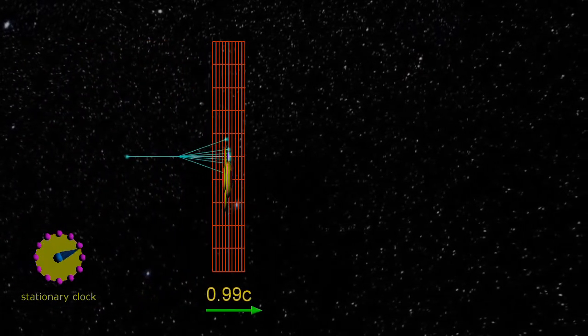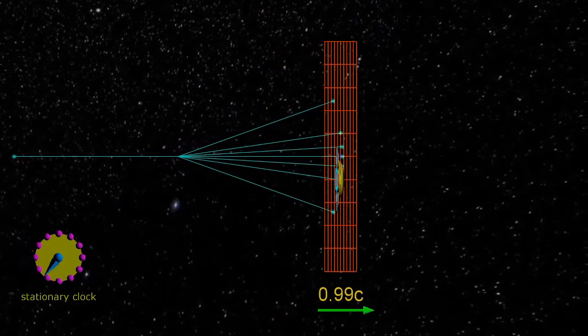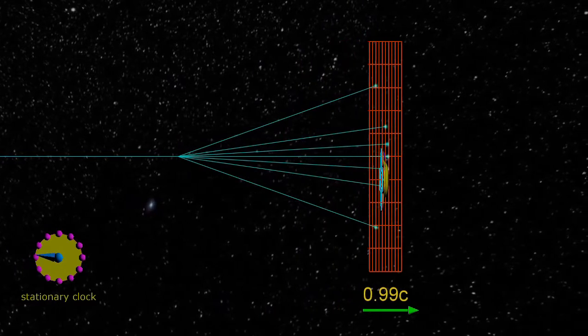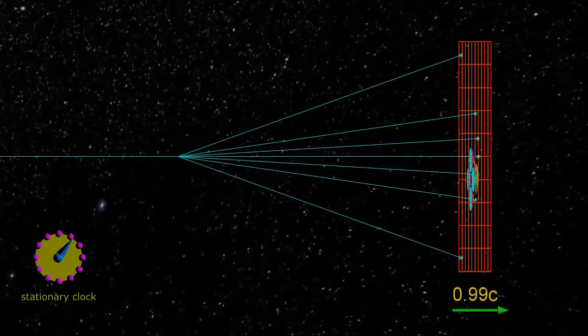When looking at the spacecraft moving at 0.99c, it is quite amazing to think that on board the yellow spacecraft, the photons radiate in a uniform distribution.